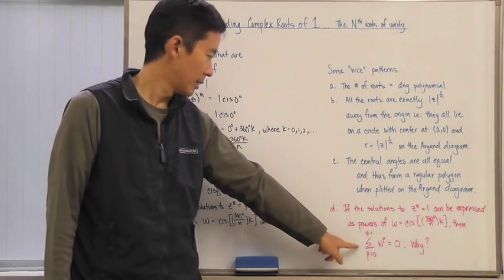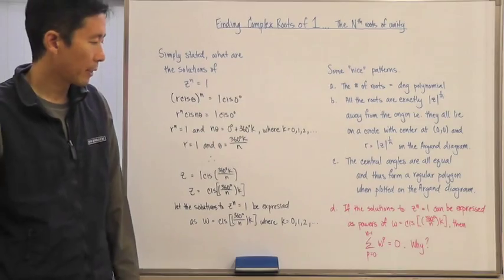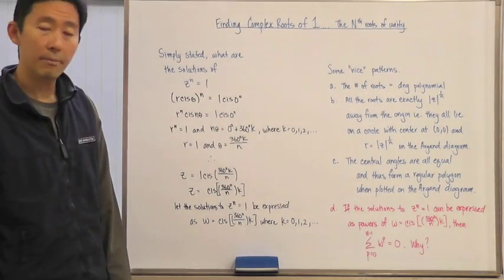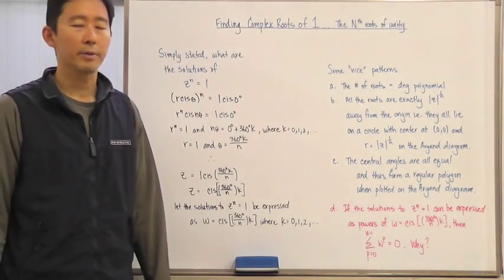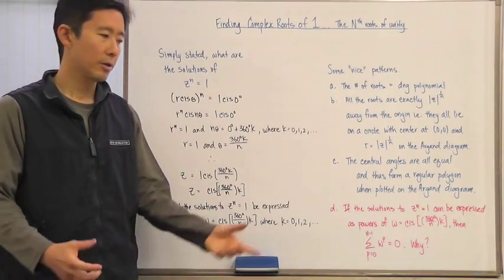The summation says that the sum from p equals 0 to n minus 1 of w to the p is going to be equal to zero. Now we're going to take a look at some of the reasons for that in the exercises.